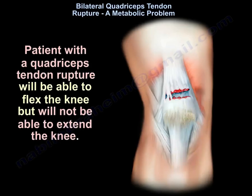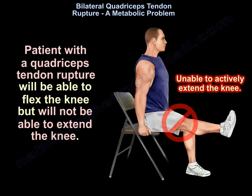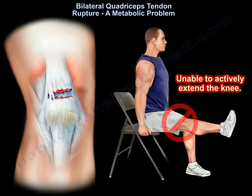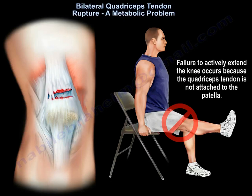A patient with a quadriceps tendon rupture will be able to flex the knee but will not be able to extend the knee. The patient is unable to actively extend the knee because the quadriceps tendon is not attached to the patella.